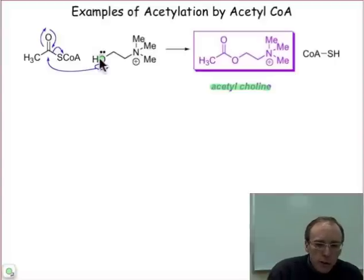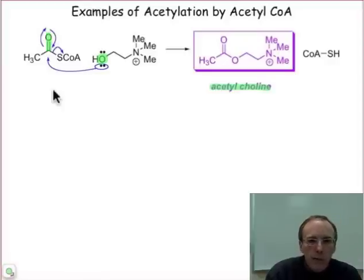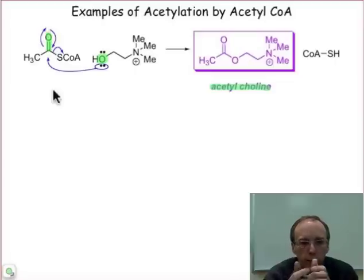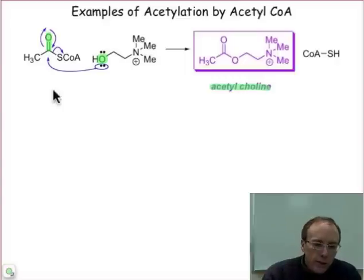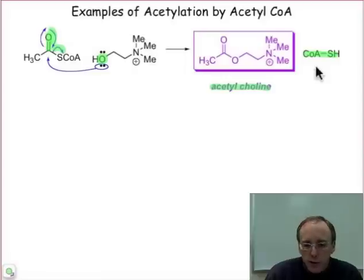Nucleophile addition — the nucleophile is the oxygen of the hydroxyl group of choline — attacks the polarized pi bond, the carbonyl group of the thioester. That generates a tetrahedral intermediate. You should be able to write that tetrahedral intermediate. It then collapses by a beta elimination process to eliminate the thiol group of coenzyme A and form the new ester bond of acetylcholine.